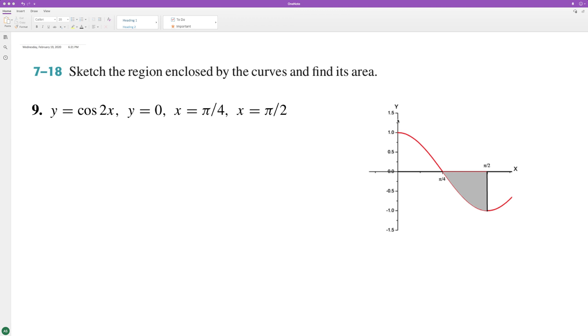Go ahead and find the area in the closed region between pi over 4 and pi over 2 for cosine of 2x.